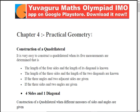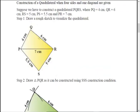Practical geometry means construction — we have to construct something. Here we will be focusing mainly on quadrilaterals. A quadrilateral is easy to construct when five measurements are known. Those five can be: length of four sides and one diagonal; length of three sides and two diagonals; three angles and two adjacent sides; three sides and two angles; and there are special types involving diagonals also.